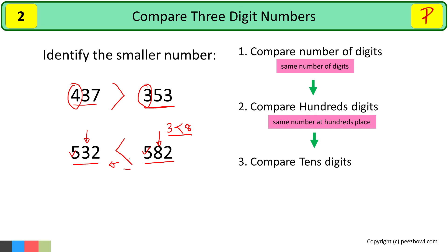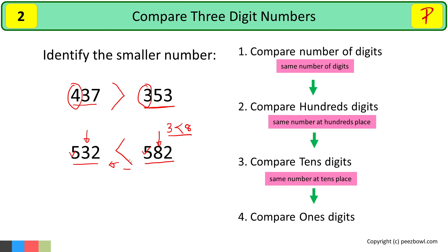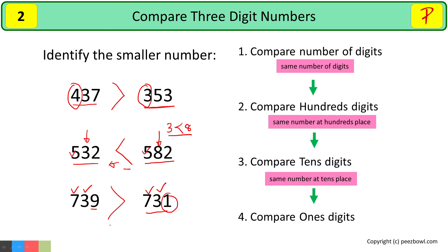Now, consider if both the numbers have the same digits at the hundreds place and at the tens place as well. Then we compare their digits at the ones place. In this example, both the numbers have the same digit at the hundreds place, that is 7. Also, both the numbers have the same digit at the tens place as well, that is 3. So we will compare their digits at the ones place. As 1 is smaller than 9, so 731 is a smaller number than 739. I will place the smaller than symbol towards 731. Hope you understood this concept. In my next video, I will bring more examples.